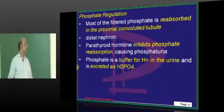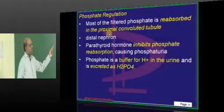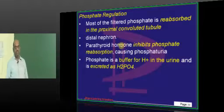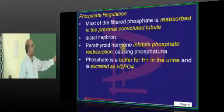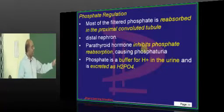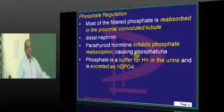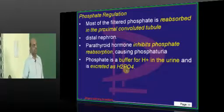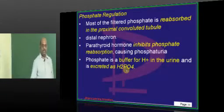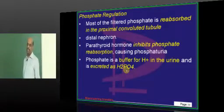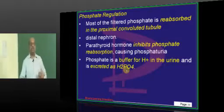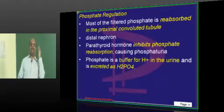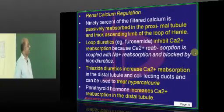How about phosphate? Most of it is reabsorbed in the proximal convoluted tubule, but in the presence of parathormone, it inhibits phosphate reabsorption and leads to phosphaturia. The importance of phosphate is that phosphate binds with the H+ ion and forms H2PO4, which is a way by which H+ can be buffered and acid can be lost from the body.